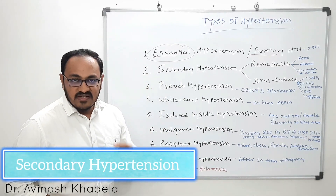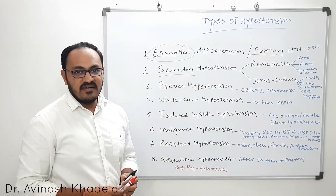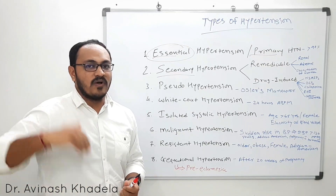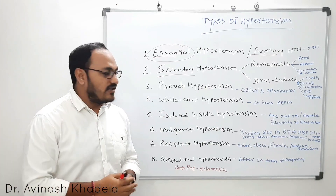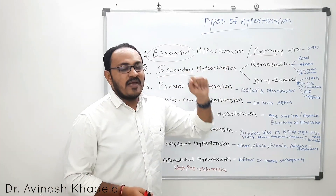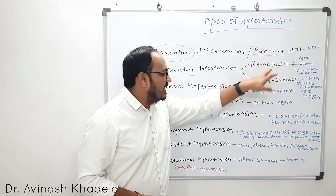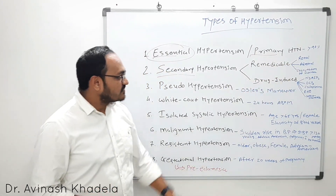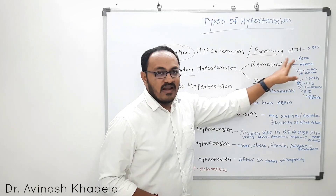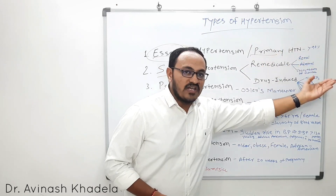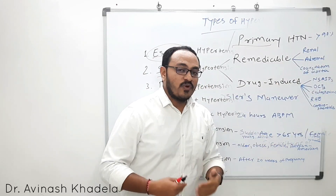Coming to secondary hypertension — the word itself indicates that the hypertension is secondary to a primary cause. The primary cause of the rise in blood pressure may be different conditions. Secondary hypertension is divided into two types: first, remediable hypertension, and second, drug-induced secondary hypertension.